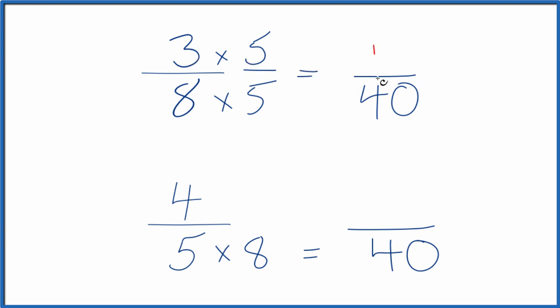3 times 5, that's 15. And 15 fortieths, that's an equivalent fraction to 3 eighths. They have the same value.